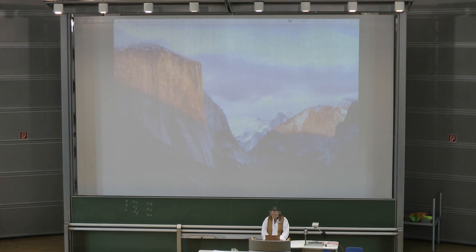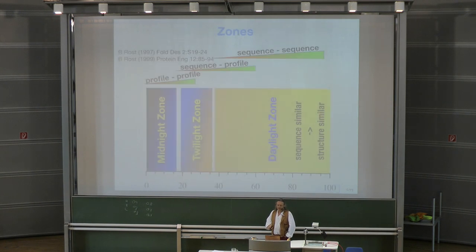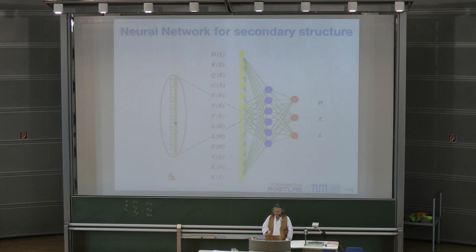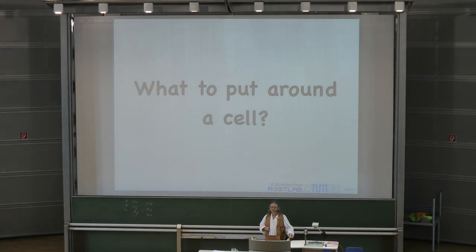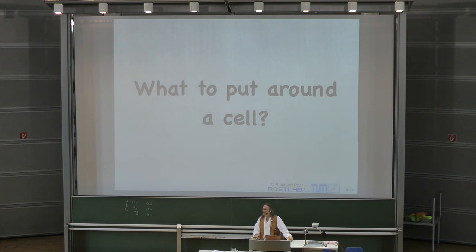So then we get into membrane prediction. The first question is: what do you put around a cell? A cell is essentially a single-cell creature like bacteria. Are there any bacteria that live not as single cells — are there multi-cell bacteria? Something like that does exist; this is biology, where you can almost always find an exception.